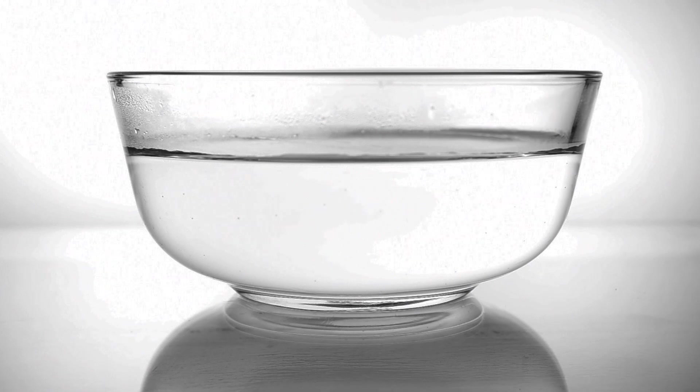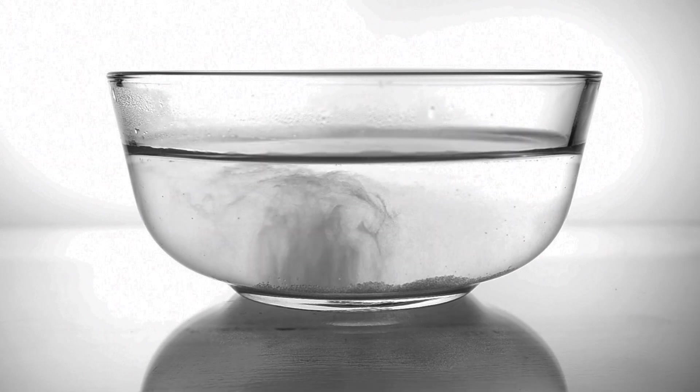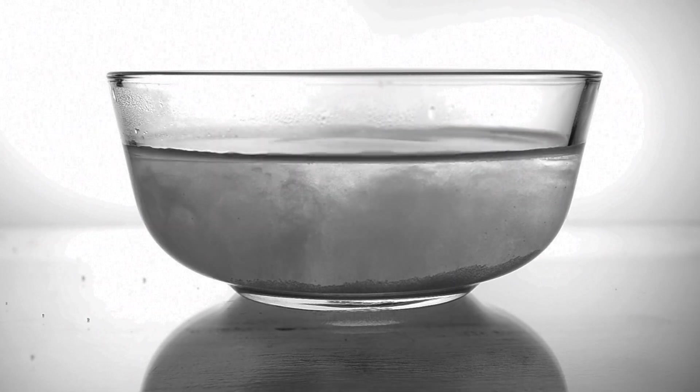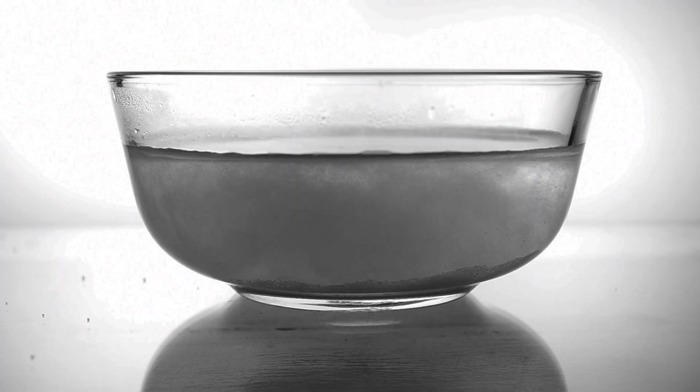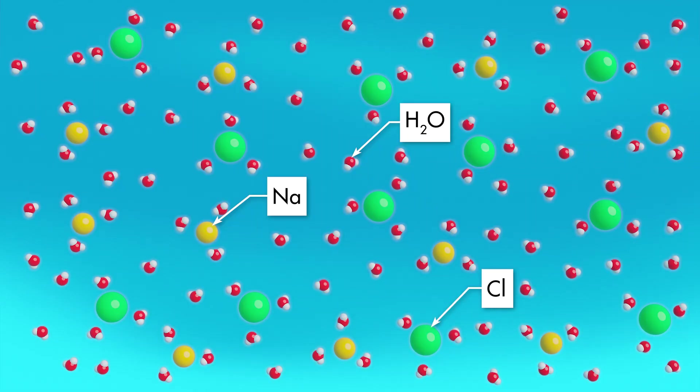When we add salt crystals to water, the crystals dissolve, but the salt and water do not chemically combine. The salt crystals are broken into microscopic particles that are distributed throughout the sample. If we had a microscope powerful enough to see individual molecules, we would be able to see the sodium and chloride ions dispersed among the molecules of water.